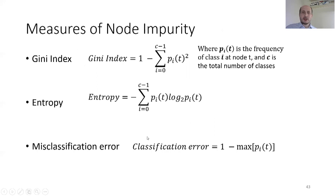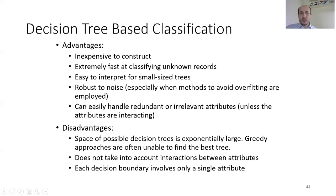Advantages of decision trees: they are inexpensive to construct, extremely fast at classifying unknown records, easy to interpret for small-sized trees, robust to noise, and can easily handle redundant and irrelevant attributes. Disadvantages include: the space of possible decision trees is exponentially large, greedy approaches are often unable to find the best trees, they do not account for interactions between attributes, and each decision boundary involves only a single attribute.